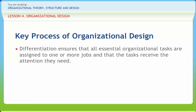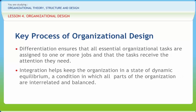Time orientation, manager's goal orientation, interpersonal orientation, and formality of structure are the four dimensions of differentiation. Integration is the process of coordinating the different parts of an organization, helping keep the organization in a state of dynamic equilibrium — a condition in which all parts are interrelated and balanced. Vertical linkages are used to integrate activities up and down the organizational chain of command, including hierarchical referral, rules and procedures, positions added to the structure, and management information systems.